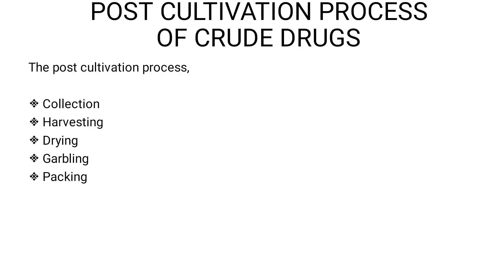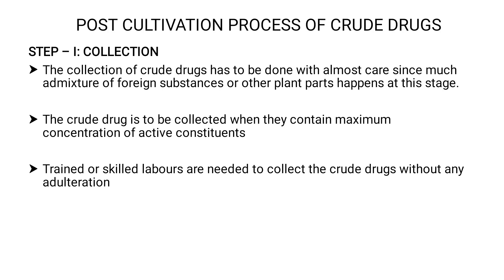Good evening. Yesterday we discussed various methods of cultivation of crude drugs — sexual, asexual, and so on. In continuation of that topic, today we will be discussing the various processes involved after cultivation, which is the post-cultivation process of crude drugs. Once the crude drug has matured, the steps are: Step 1 — collection and harvesting; Step 2 — drying; then garbling; and finally packing.